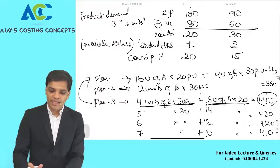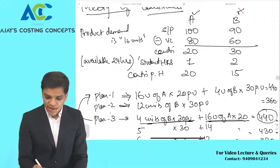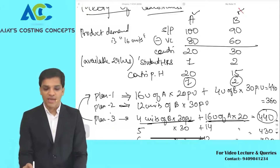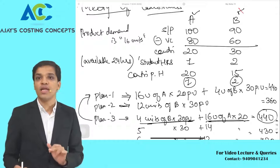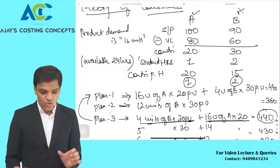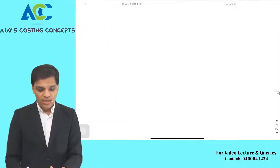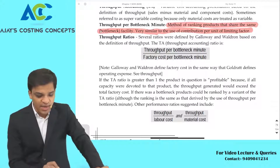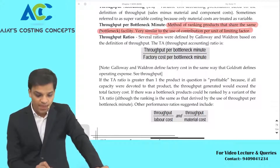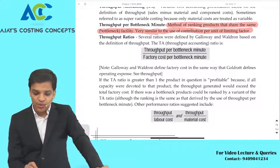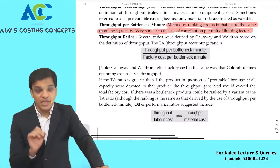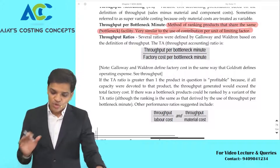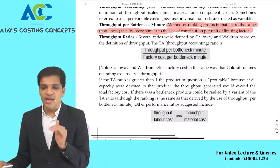The throughput accounting ratio — defined by Goldratt and Walton based on the definition of throughput — is: throughput per bottleneck minute divided by factory cost per bottleneck minute. Throughput per bottleneck minute is the contribution you earn per bottleneck minute — that is, contribution per unit divided by bottleneck minutes.